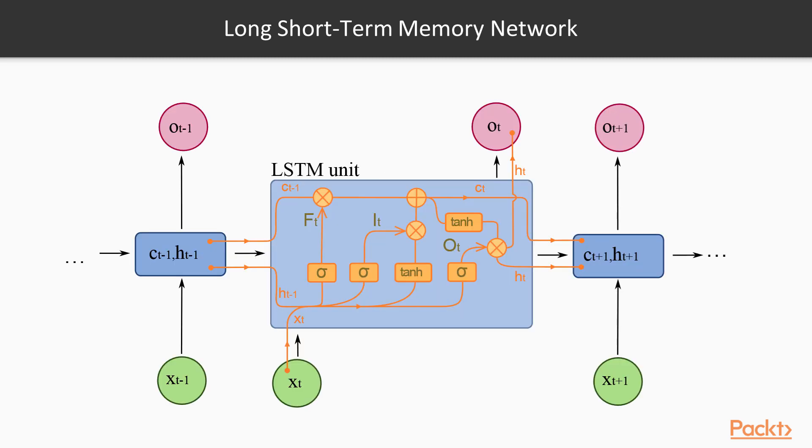Long short-term memory networks, usually just called LSTMs, are a special kind of recurrent neural network capable of learning long-term dependencies. In standard recurrent neural networks, this repeating module will have a very simple structure such as a single tanh layer.